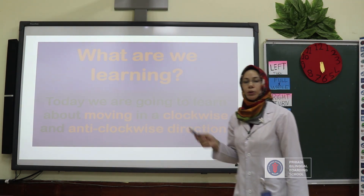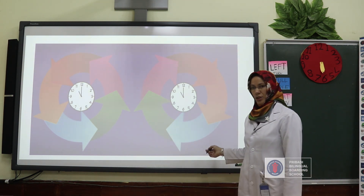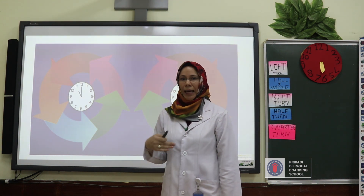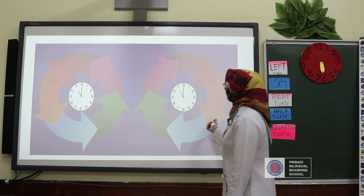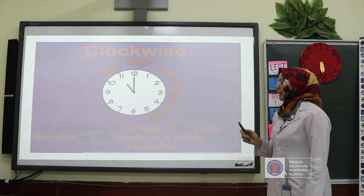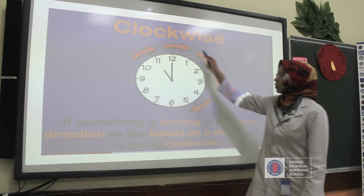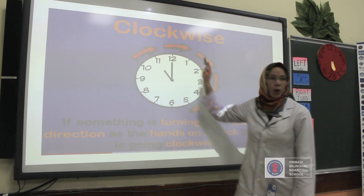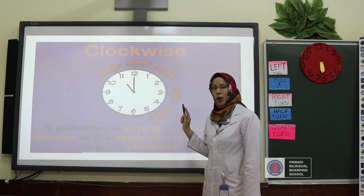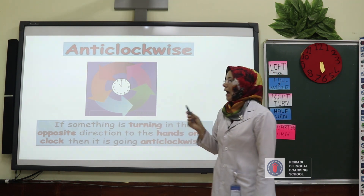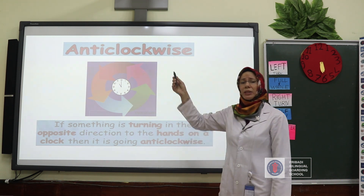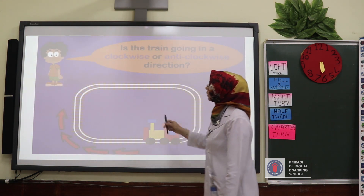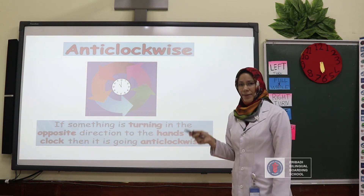What are we learning today? We are going to learn about clockwise and anticlockwise. Please repeat after me: clockwise, anticlockwise. If something is turning to the right side, it is clockwise. Anticlockwise means if something is turning opposite to clock hands — like to the left side — it is called anticlockwise.